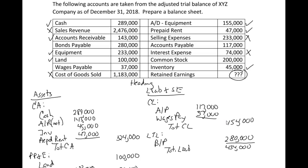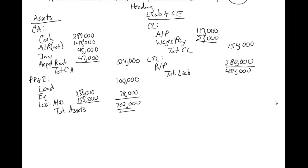Let's go back up — bonds payable, wages payable, accounts payable are all checked off. Our only accounts left now are common stock and retained earnings, which are both equity accounts, so we're ready to do the equity section. Common stock is given as $200,000. But retained earnings was not given, so you might be wondering how to come up with it.